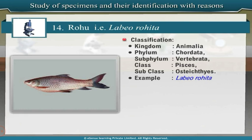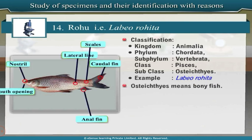Rohu displays all the characters of bony fish such as aquatic mode of life, four pairs of gills covered with operculum, bony endoskeleton, etc. Hence it is included under class Pisces and subclass Osteichthyes. Osteichthyes means bony fish. The scientific name of rohu is Labeo rohita.